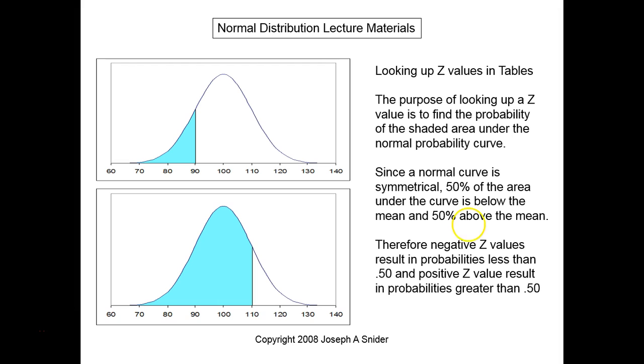Now looking up Z values in statistical reference tables, what you're doing is looking them up in order to be able to find a probability value. There are Excel formulas that do this for you too, but the way to do it by hand is to have a reference table of Z lookup values.